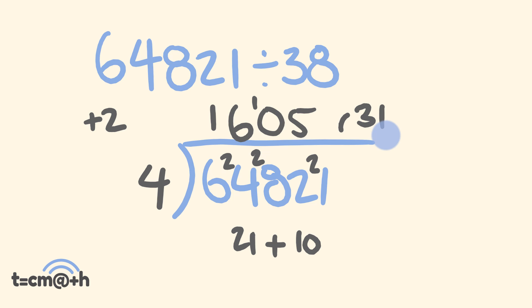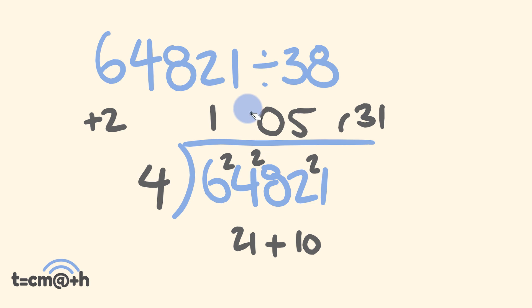Not quite finished yet. I did say I was going to sort something else out — this particular part here. All we do is carry this one across. So one plus six becomes a seven here. Our answer: 1705 with a remainder of 31. That's the little variation you get with that.